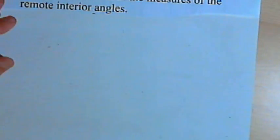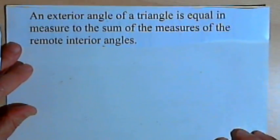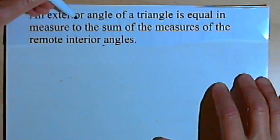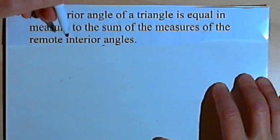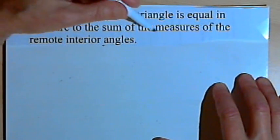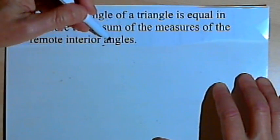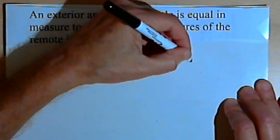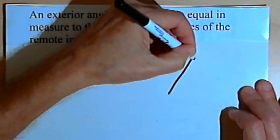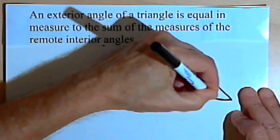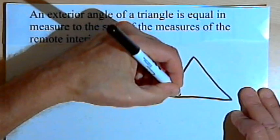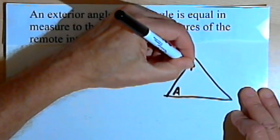So here's how this works. The exterior angle theorem says that an exterior angle of a triangle is equal in measure to the sum of the measures of the remote interior angles. Here's what all that means. Let's say I've got a triangle. I'm going to label the interior angles a, b and c.